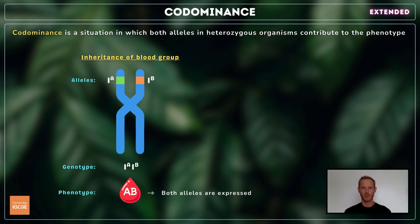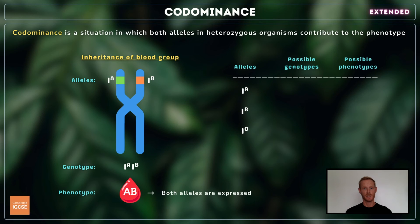Next, you need to understand the term codominance. Codominance is a situation in which both alleles in heterozygous organisms contribute to the phenotype. This can be seen in the inheritance of human ABO blood groups. In the ABO system, there are three alleles — written I^A, I^B and I^O — but four phenotypic blood groups: A, B, O and AB.